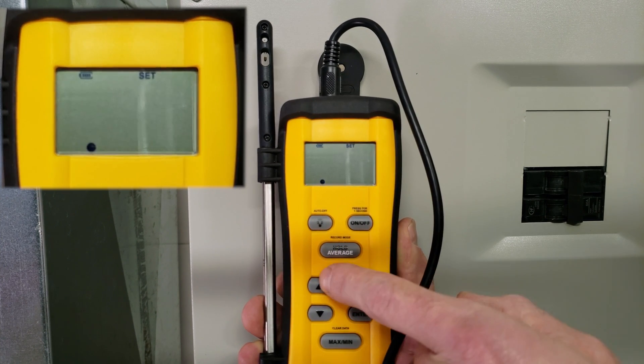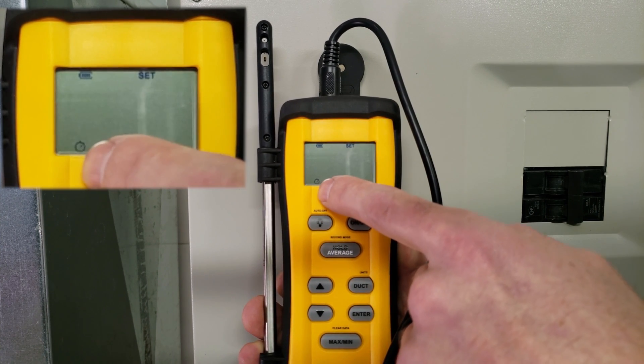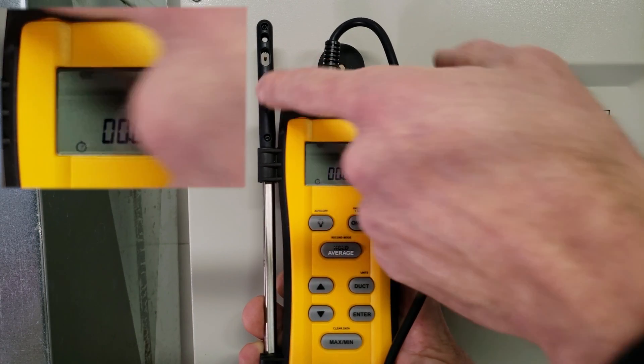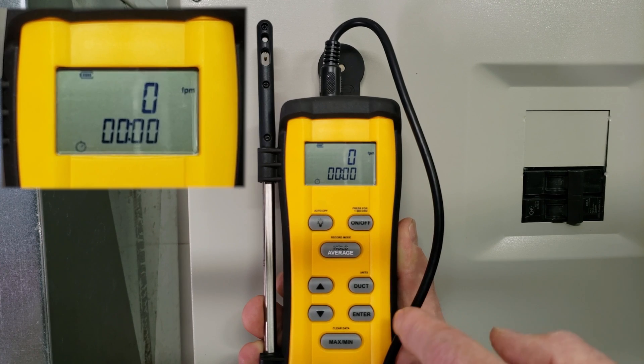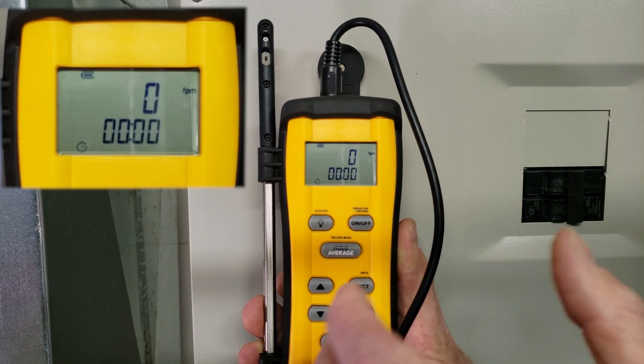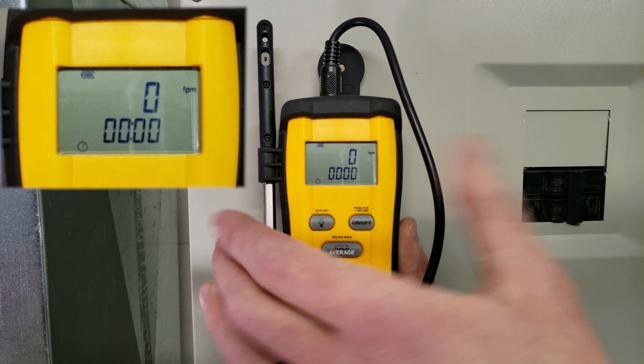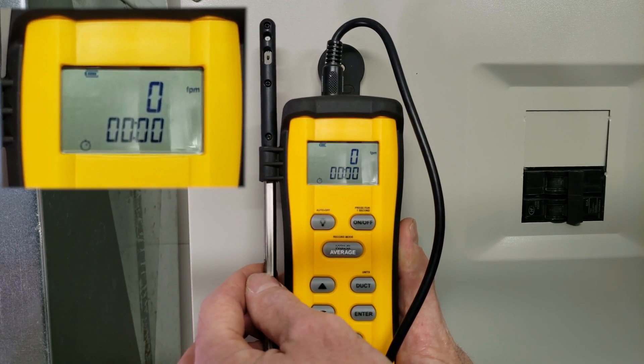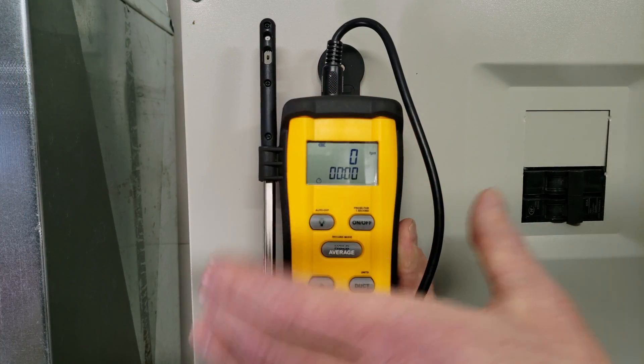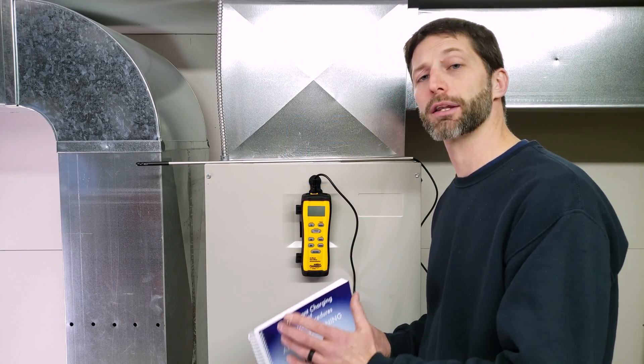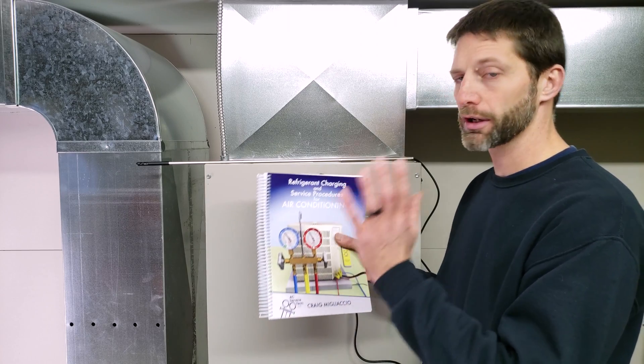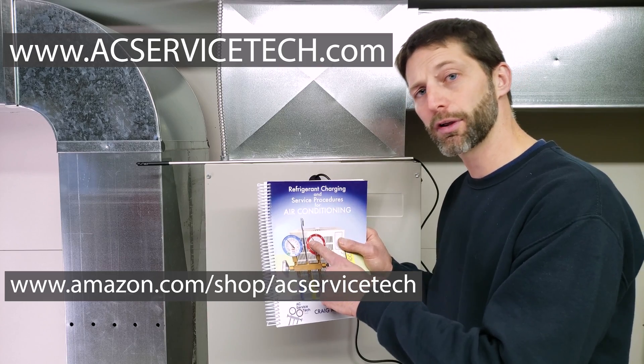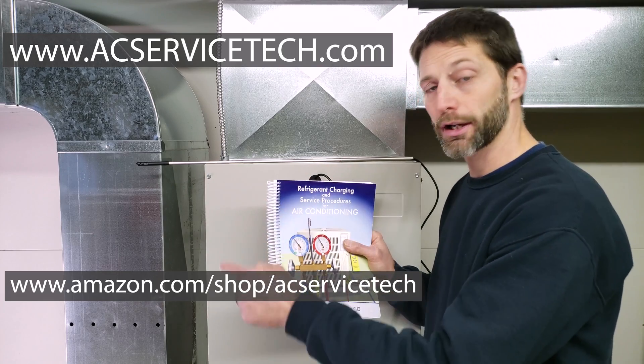We have our clock ready. When we get the probe all the way in the duct, we press enter to start timing. We're putting the probe at different depths inside the duct in five different holes to get an average CFM for the whole duct. It's very important to check airflow in preparation for checking refrigerant charge. Check out our book available on our website and Amazon.